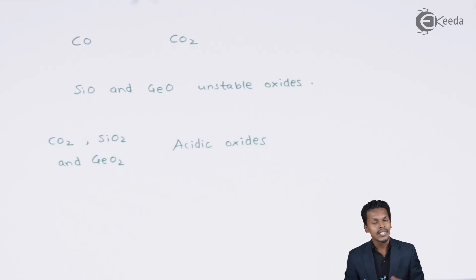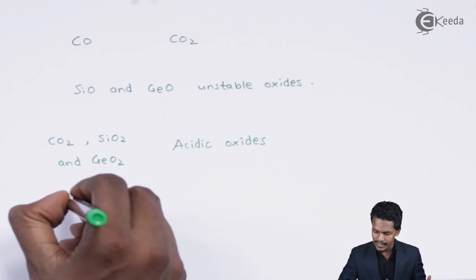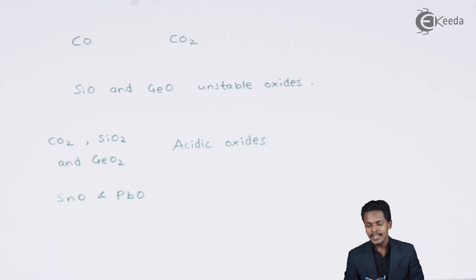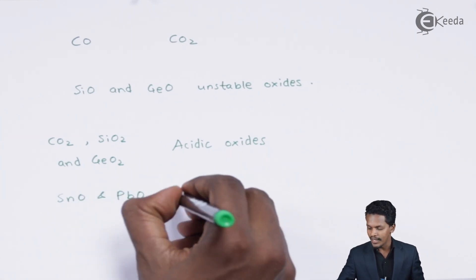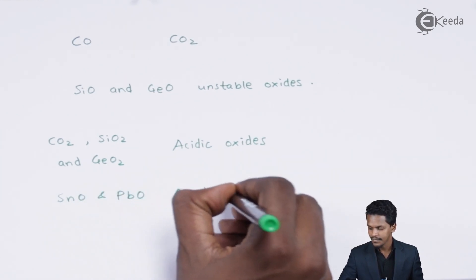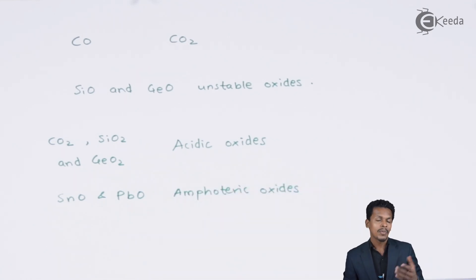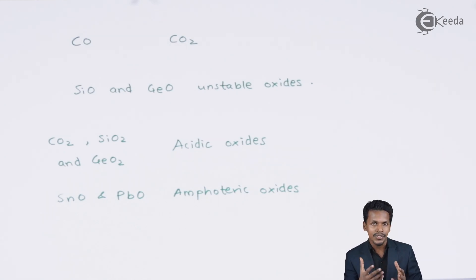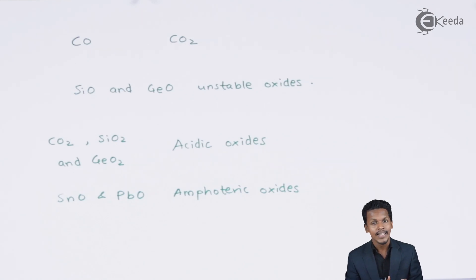The oxides that are amphoteric in nature are SnO and PbO — these two are the amphoteric oxides. Carbon monoxide is basically a neutral oxide and does not give an acidic or basic solution. This is how the reaction takes place whenever a Group 14 element reacts with oxygen.